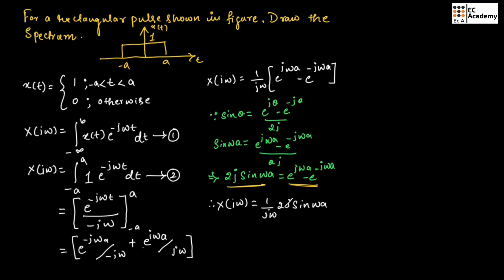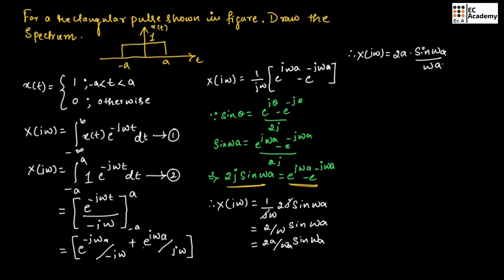If we cancel out 2j, we get 2 by ω times sin(ωA). We then multiply and divide by A, giving us 2A by ωA times sin(ωA), which we can write as X(jω) equals 2A times sin(ωA) divided by ωA. We have multiplied numerator and denominator by A because we need to write the term in the form of the sinc function. Since sin(x) divided by x is known as the sinc function, we can write this expression as 2A times sinc(ωA).